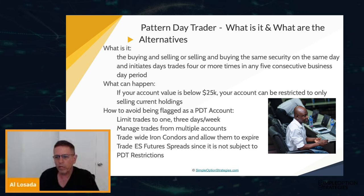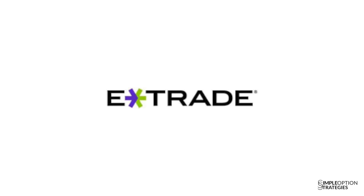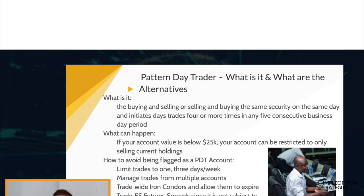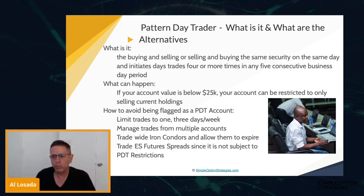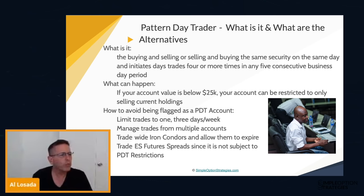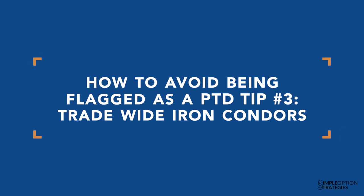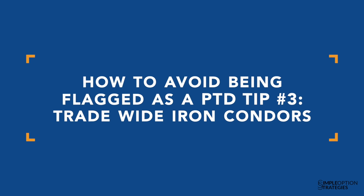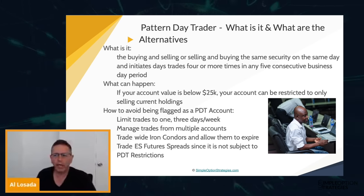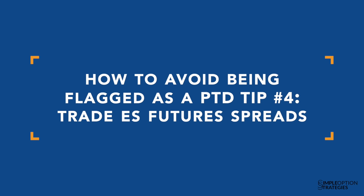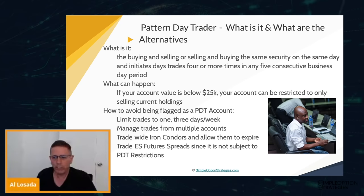Another way to manage PDT is to use multiple accounts. If you trade in one account and then another on varying days, you basically get double the day trades. I know a lot of people who trade a regular margin account and an IRA account simultaneously. You can also trade wider iron condors, which gives you less risk of having to close the trade and allows it to expire. And future spreads are not subject to PDT restrictions.